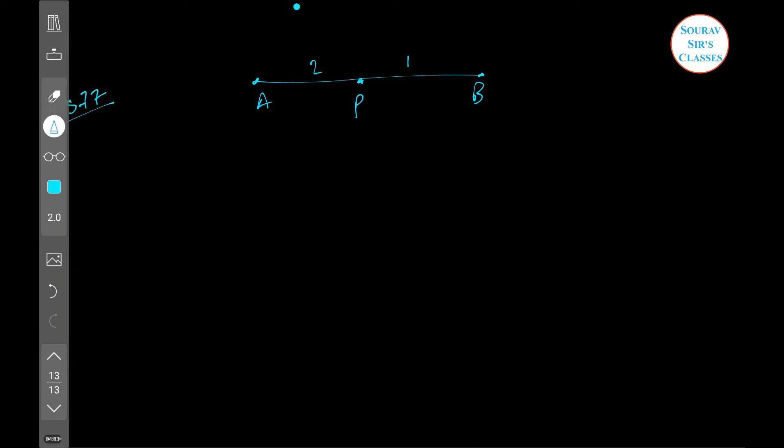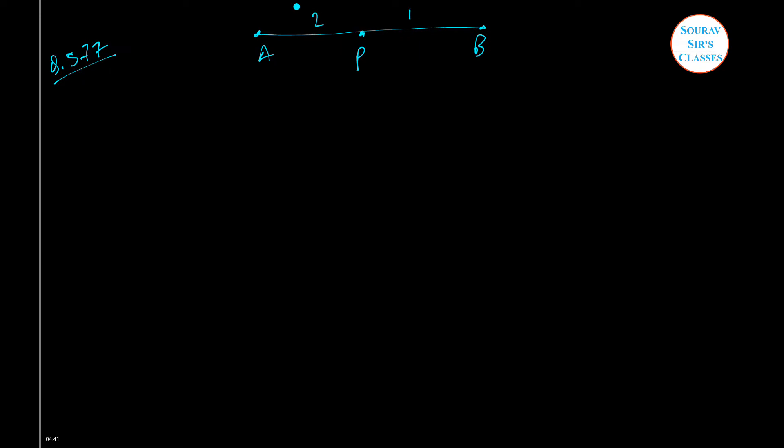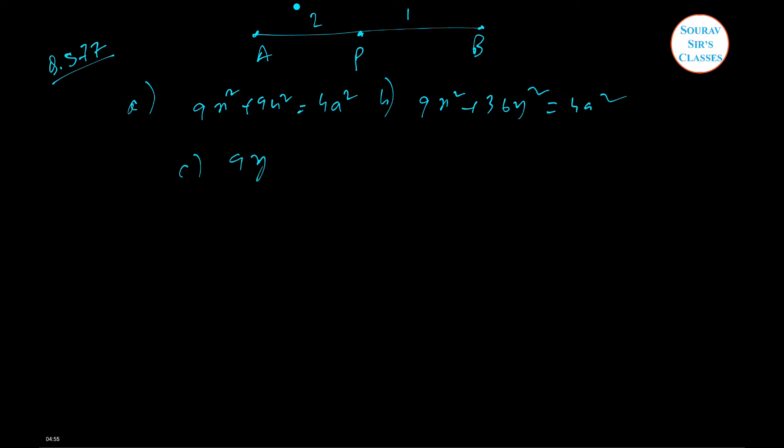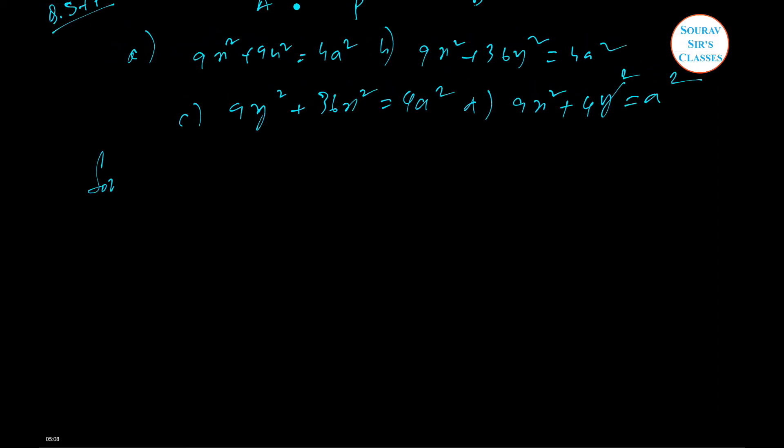We have to find the relationship between X, Y and A. There are some options given. Option A is 9X square plus 9Y square equal to 4A square. Option B is 9X square plus 36Y square equal to 4A square. Option C is 9Y square plus 36Y square equal to 4A square. And option D is 9X square plus 4Y square equal to A square.